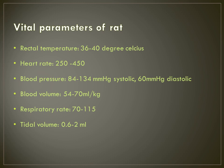Vital parameters of the rat: Rectal temperature is generally 36 to 40 degrees Celsius. Heart rate is between 250 and 450 beats per minute. Blood pressure — systolic around 110, diastolic around 60 mmHg. Blood volume is 60 ml per kg (middle value between 54 and 70). Respiratory rate is around 90 breaths per minute, and tidal volume is between 0.6 and 2 ml.